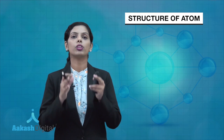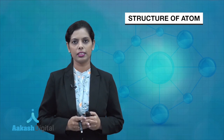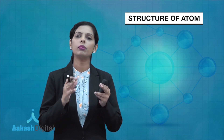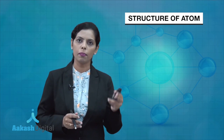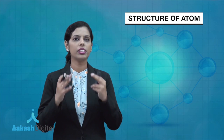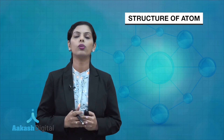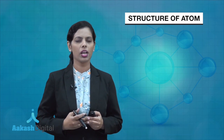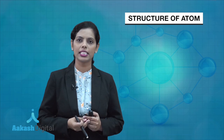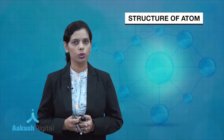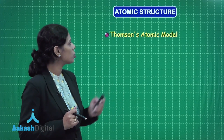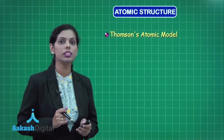Atomic structure was proposed by different scientists. As Dalton proposed in his atomic theory that atom is the smallest constituent of matter. In the similar manner, different scientists proposed different theories related to the structure of atom — how subatomic particles are present in the atom. The first model we have is Thomson's atomic model.